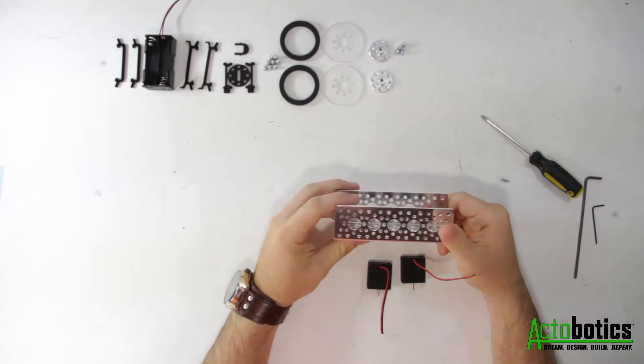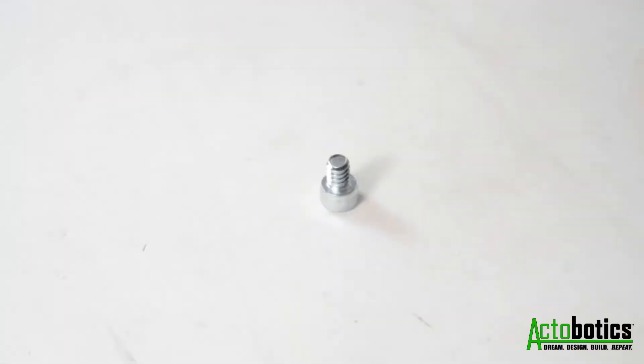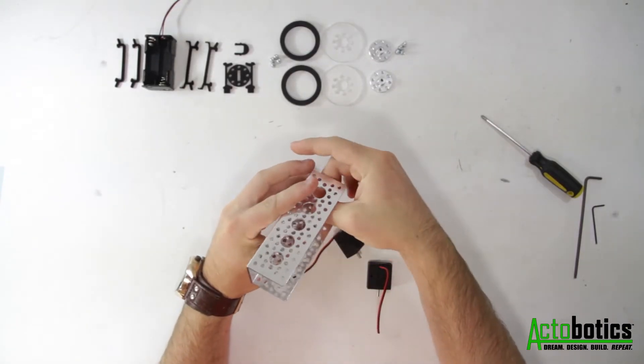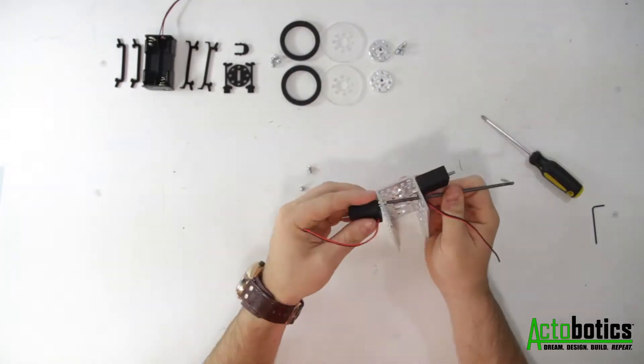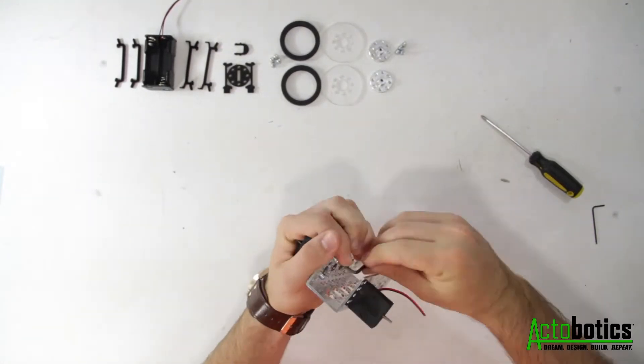Next you'll attach the motors to the 3.75 inch channel using the 6-32 hex head screws. When attaching the motors I find that it's best to fasten each of the inside screws first. This gives you a little easier access to the screws as you attach the motors.